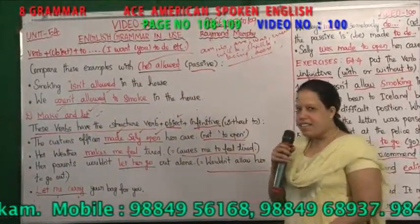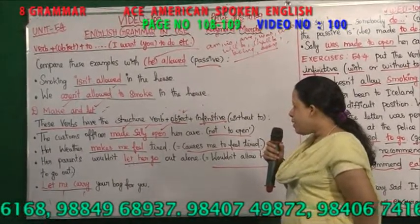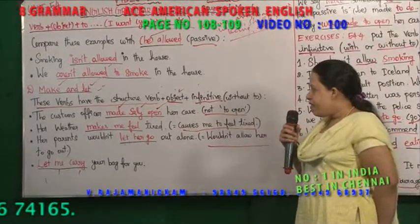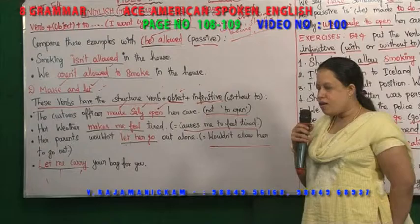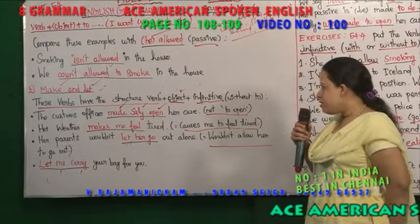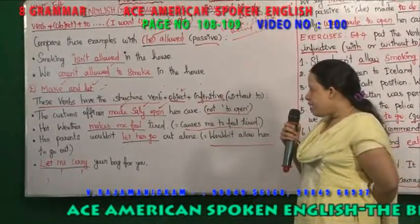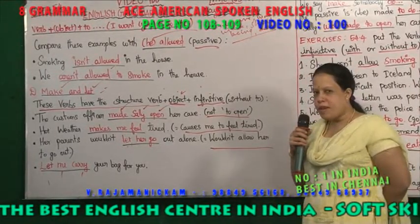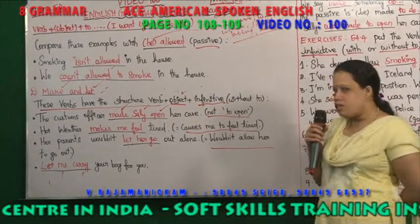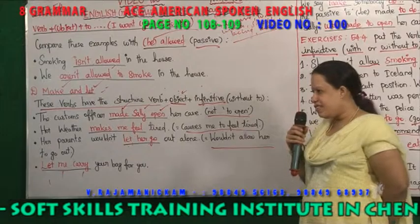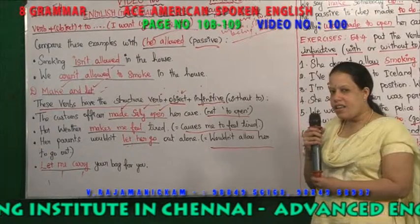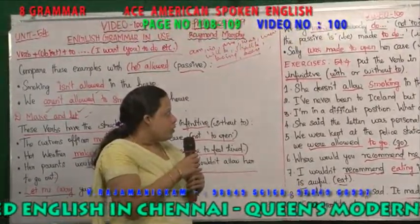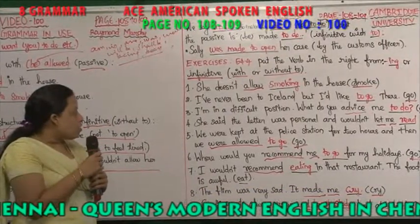Hi, I am Gayatri. Verb plus object — 'I want you to do'. Compare this example with 'be allowed'. 'Smoking is not allowed in the house.' 'We aren't allowed to smoke in the house.' Make the verbs: verb plus object plus infinitive. 'The customs officer made Sally open her case.' 'Hot weather makes me feel very tired.' 'Sally was made to open her case.'